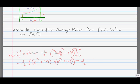So we have 2 cubed, which is 8 minus 4 minus 0. So we have 1 half times 4, and we wind up with the total average value being 2.